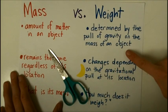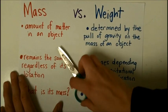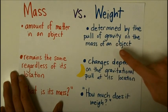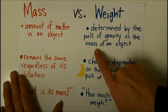Weight, however, is determined by the pull of gravity on the mass of an object. So, mass has to do with just how much is there, weight is affected by gravity and the mass.